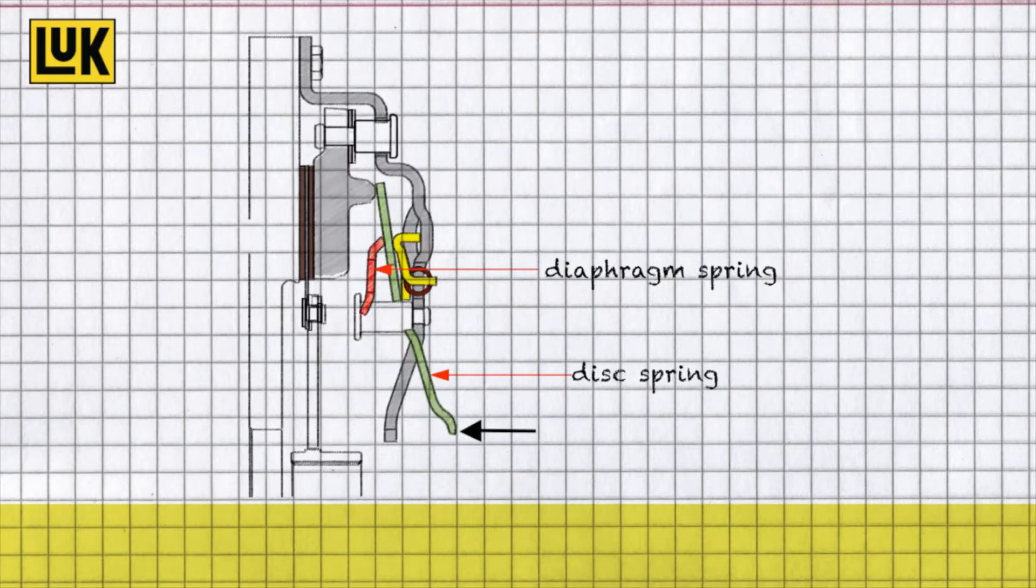The diaphragm spring in the clutch pressure plate compensates for this, and it adjusts accordingly to ensure further function.